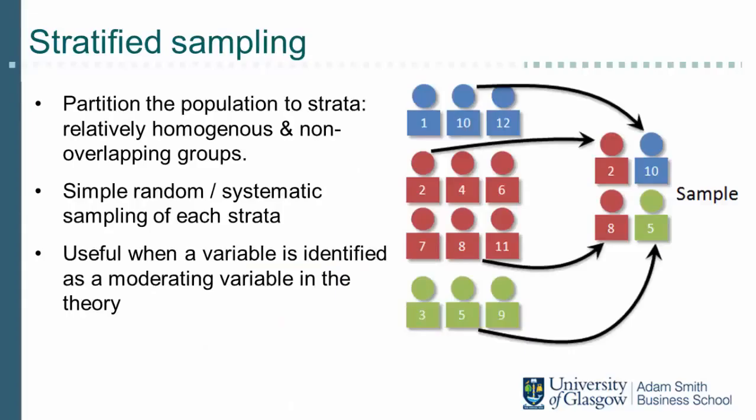In stratified sampling we divide the population into mutually exclusive strata. We sample from each stratum separately using simple random sampling, and the separately sampled elements are added together to form the final sample. Stratified random sampling is useful for two reasons. First, it allows us to ensure that, at least in terms of the sample strata, our sample is representative — meaning subpopulations are represented in the sample in exactly the same proportion as they appear in the population.